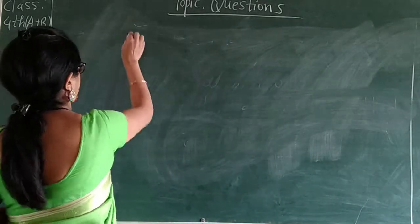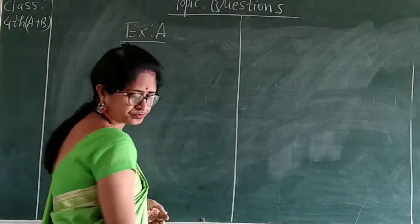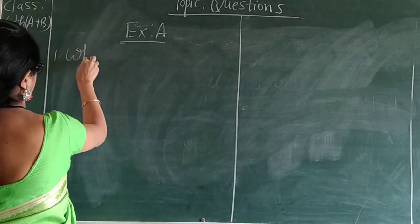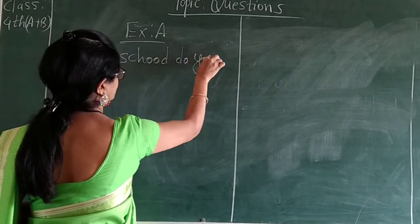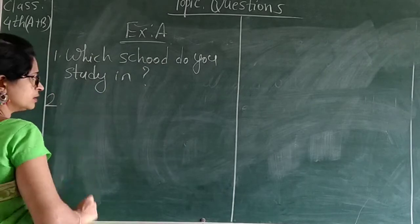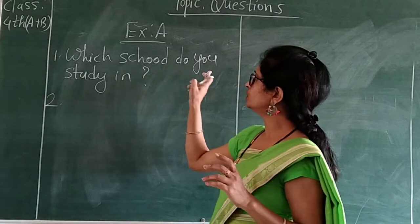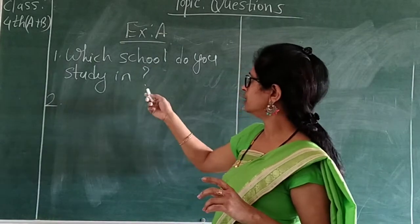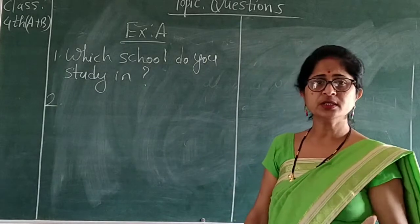Exercise A. The first question given here is: Which school do you study in? So in which school do you study? You have to write your answer. For example, I study in public school — but you have to write it with your own school's name.